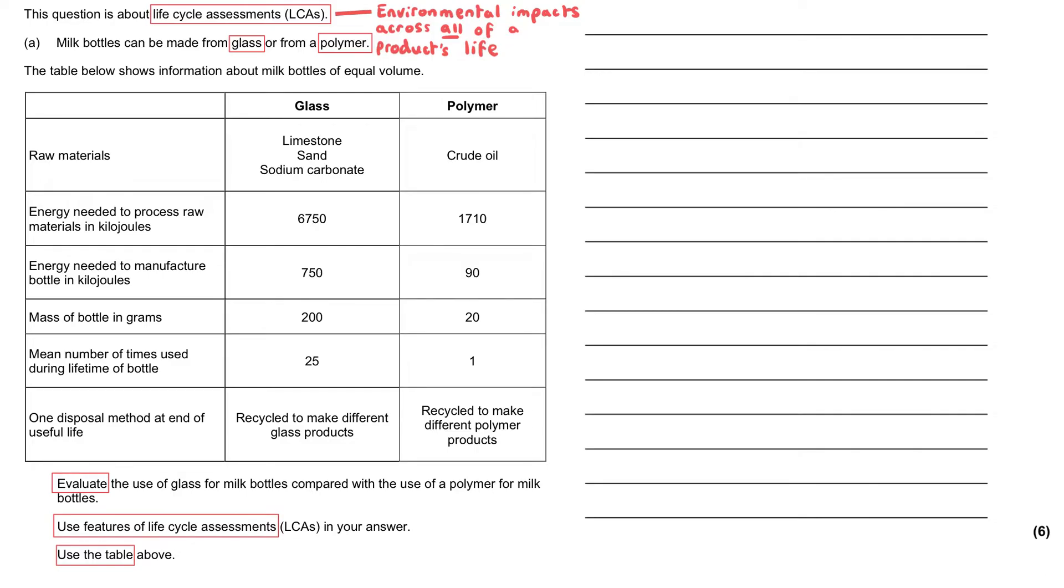It's normally six marks as it is here, sometimes four when they give you less data. I've got three really important tips to help guide you. First, when commanded to do an evaluation, you need to make a judgment or come up with a conclusion about which type of milk bottle is more sustainable, which has the least impact on the environment.